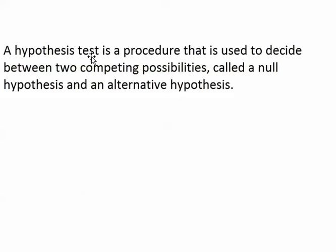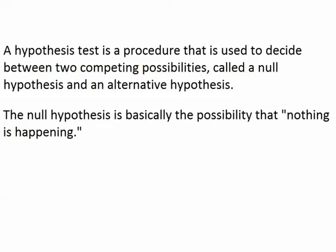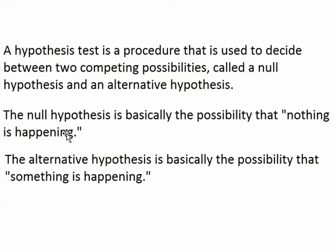A hypothesis test is a procedure used to decide between two competing possibilities, called a null hypothesis and an alternative hypothesis. In a hypothesis test, the null hypothesis is basically the possibility that nothing is happening — nothing is going on. The alternative hypothesis is the possibility that something is happening, meaning something is going on.